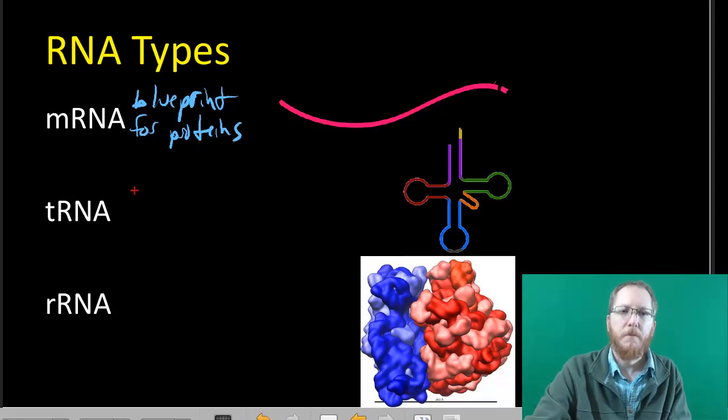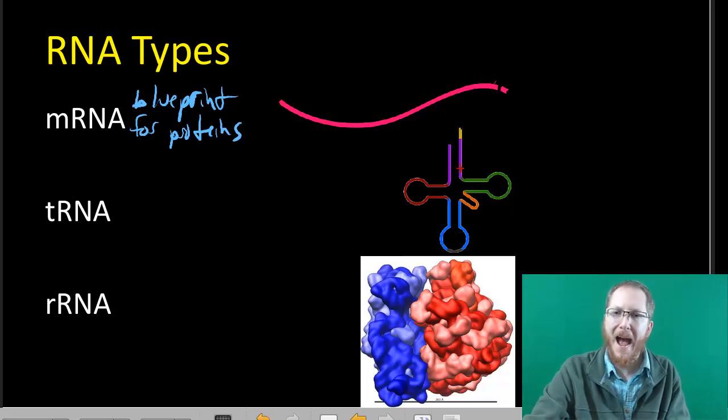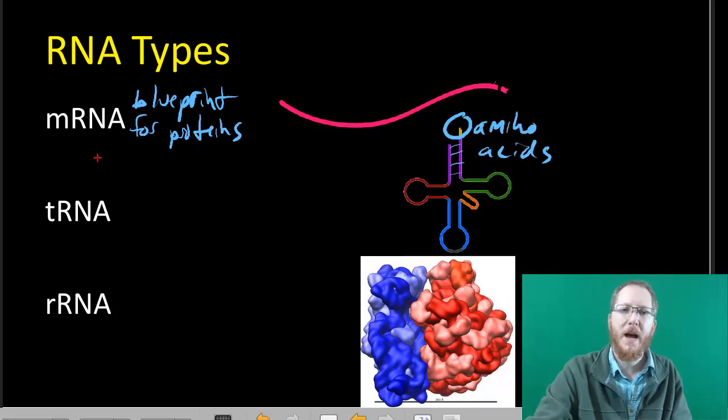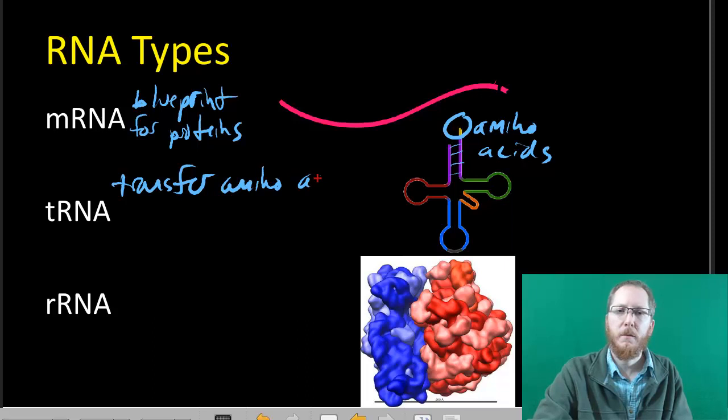Whereas tRNA, these guys are typically bent back and they will hydrogen bond the complements, so they tend to be in more of this hairpin shape, or you might think of it as like a cross shape. And on one end they're going to have an amino acid. That's kind of their job, they're going to carry amino acids.